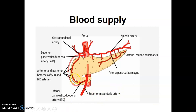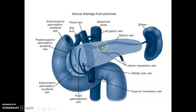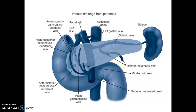The venous drainage: the splenic vein drains the body and the tail. The inferior and superior pancreaticoduodenal veins drain into the superior mesenteric vein. The splenic and superior mesenteric veins join posterior to the neck of the pancreas to form the portal vein. Some of the pancreas is also drained by the inferior mesenteric vein, which drains the descending and sigmoid colon and joins the splenic vein before the splenic vein joins the superior mesenteric vein to form the portal vein.